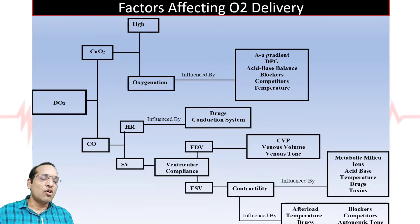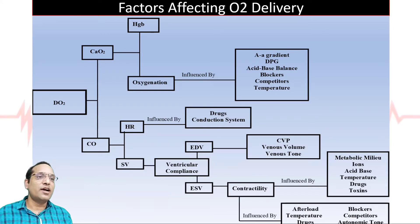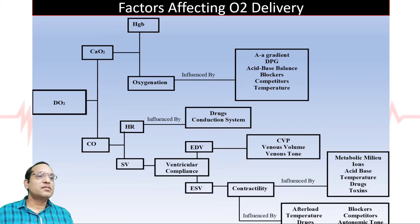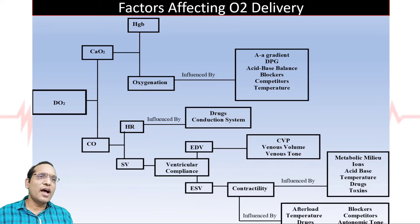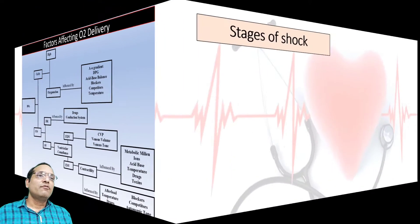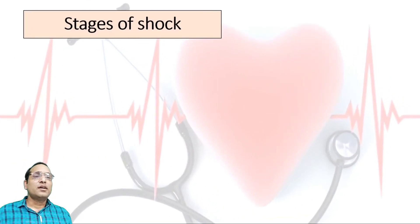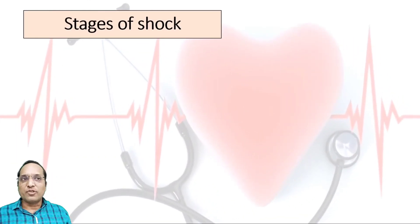Stroke volume is also influenced by afterload, temperature, drugs, blockers, and autonomic tone. Ventricular compliance is dependent on end diastolic volume, and contractility is influenced by metabolic milieu, ions, acid-base balance, and toxins. Now we come to the stages of shock.